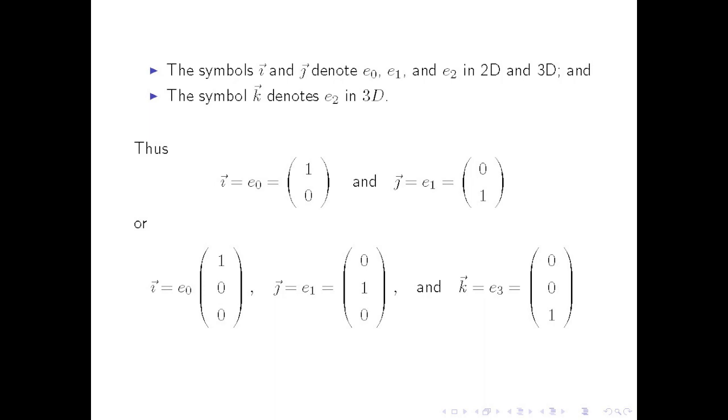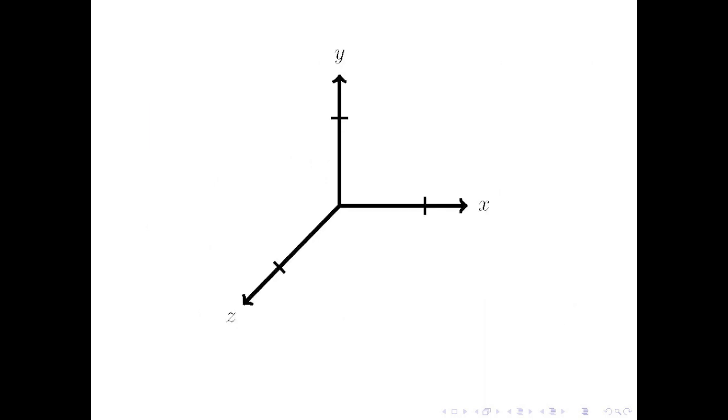They are used in, for example, physics to denote the unit basis vectors encountered in 2D and 3D. We can illustrate this with 3D coordinate axes. The three unit basis vectors can be visualized as the vectors of length 1, rooted at the origin that point respectively along the x-axis, the y-axis and the z-axis.